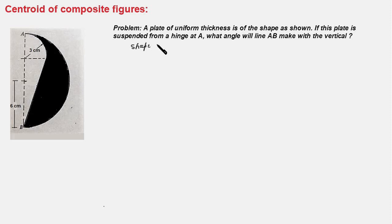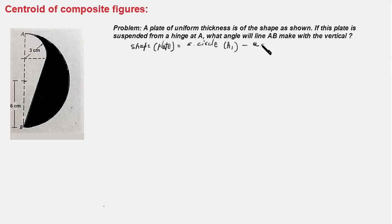So the shape of the plate is the semicircle — let's call that A1. From this we take away the quarter circle, label it A2. And we take away the triangle as well, so we label that as A3.